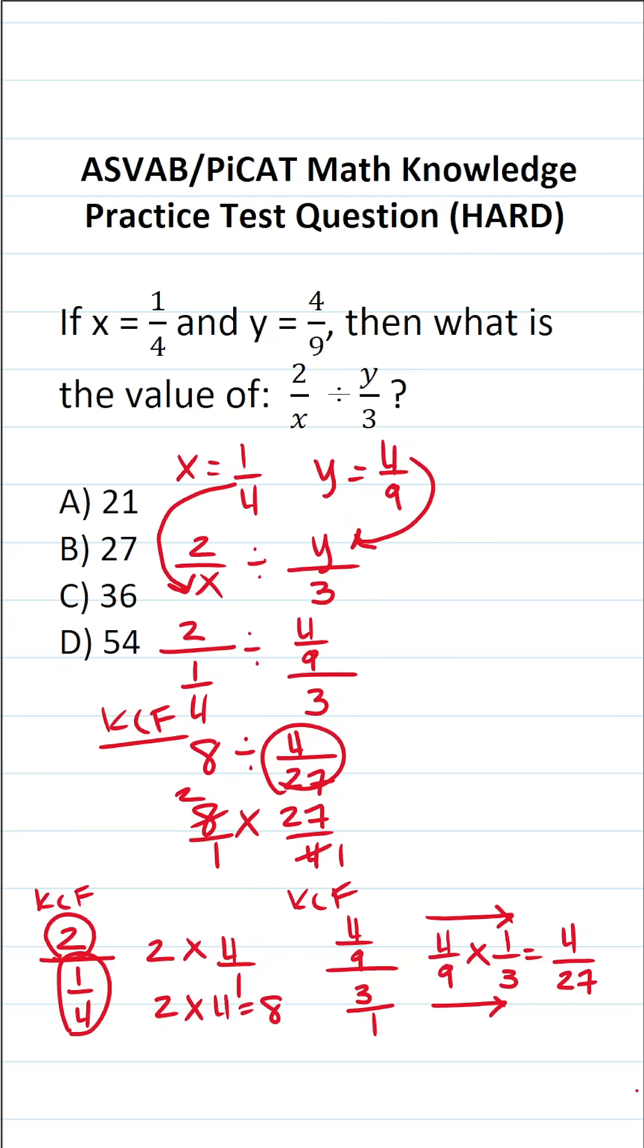This is 2/1, which is just 2, times 27/1, which is 27. What is 2 times 27? If you can't do that mentally, do it off to the side. 7 times 2 is 14, carry the 1. 2 times 2 is 4, plus 1 is 5. So 27 times 2 is 54. The answer to this one is D, 54.